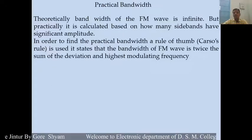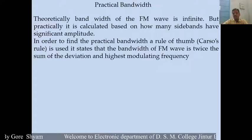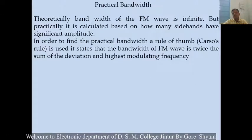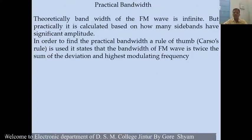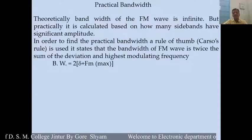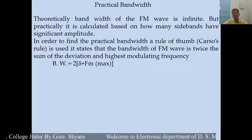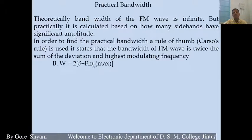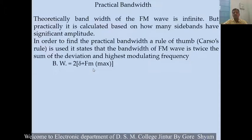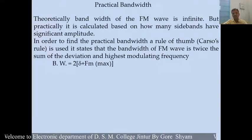In order to find the practical bandwidth, we use the thumb's rule, also known as Carson's rule. It is used to state the bandwidth of the frequency modulated carrier wave. The bandwidth is equal to twice the sum of the frequency deviation and the highest modulating frequency. For the FM wave, the practical bandwidth is: BW = 2 × (Δf + fm_max), where Δf is the frequency deviation and fm is the maximum modulating frequency.